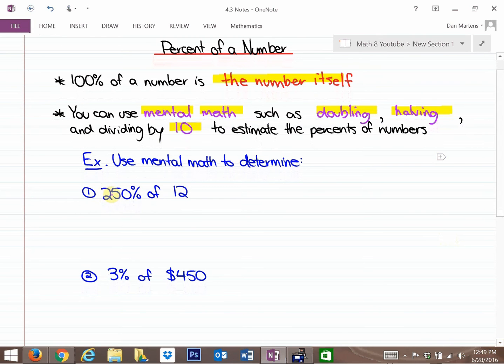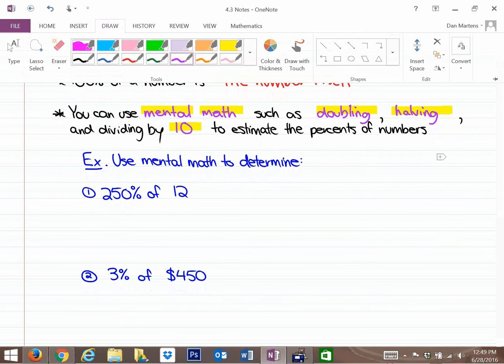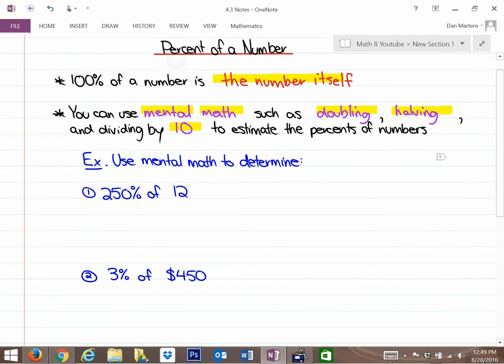Let's determine 250% of 12. Where I tend to always start these questions is with the concept of 100%. If I asked you what 100% of 12 is, you should understand that 100% of 12 is 12. If I asked you what 200% of 12 is, I hope you'd recognize that that is twice as much. So 200% of 12 would be 24.